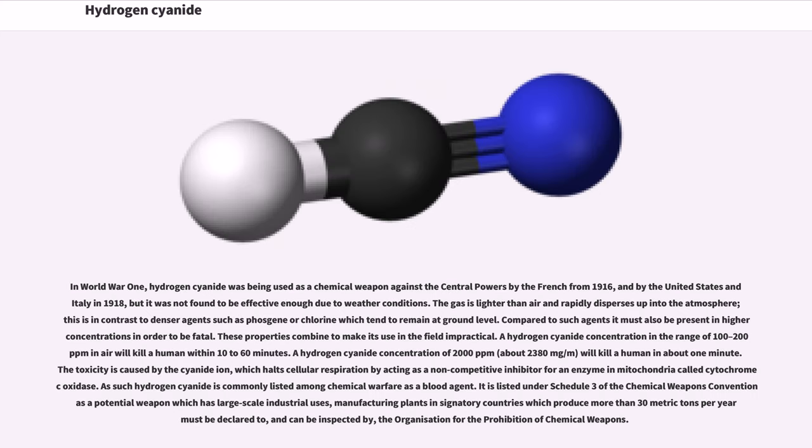In World War I, hydrogen cyanide was being used as a chemical weapon against the Central Powers by the French from 1916 and by the United States and Italy in 1918, but it was not found to be effective enough due to weather conditions. The gas is lighter than air and rapidly disperses up into the atmosphere. This is in contrast to denser agents such as phosgene or chlorine, which tend to remain at ground level. Compared to such agents, it must also be present in higher concentrations in order to be fatal. These properties combine to make its use in the field impractical.